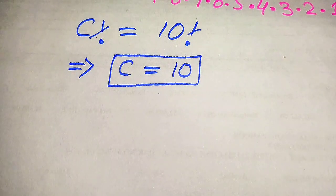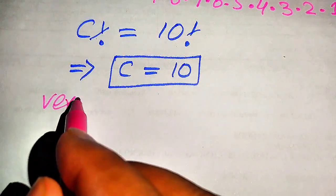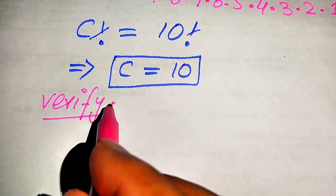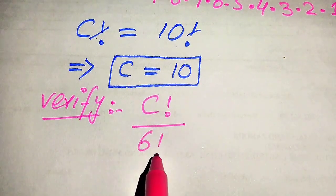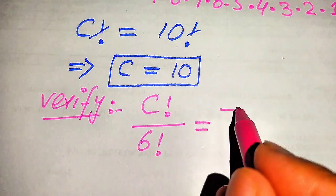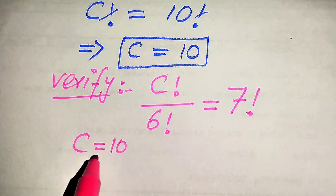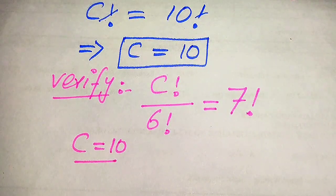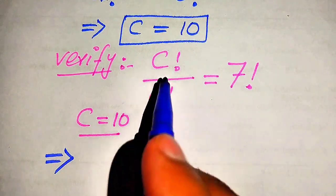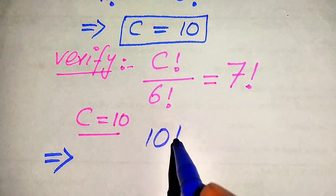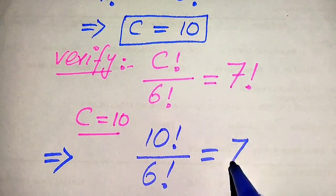Now we need to verify this value of c and check whether it satisfies the given equation. For verification, we copy the original statement: c factorial divided by 6 factorial equals 7 factorial, and substitute c = 10. The left-hand side becomes 10 factorial divided by 6 factorial, which should equal 7 factorial.